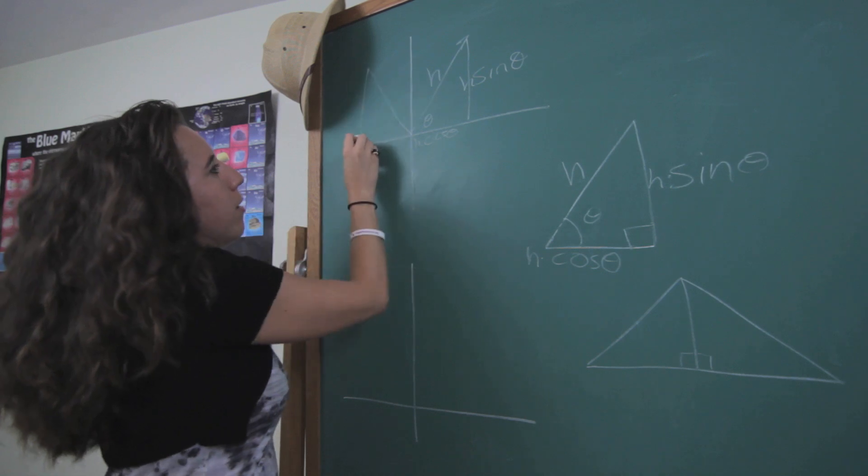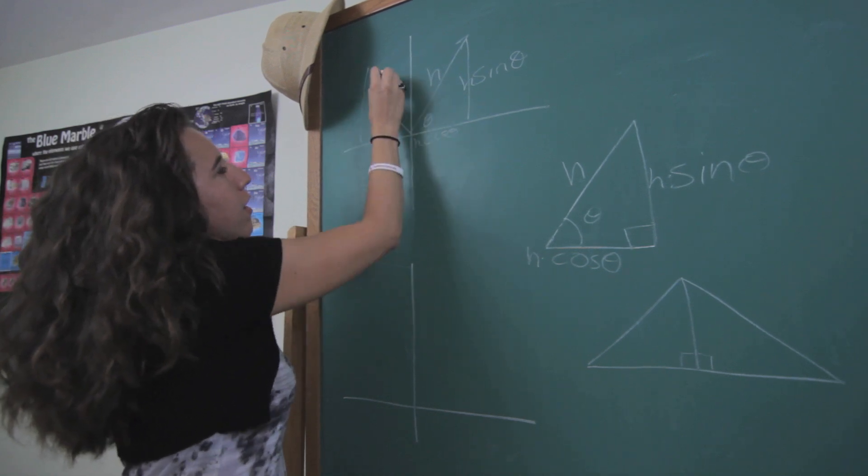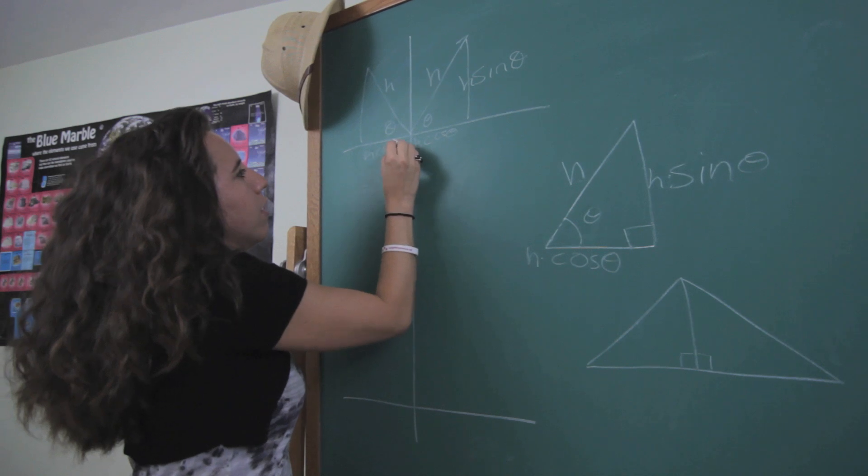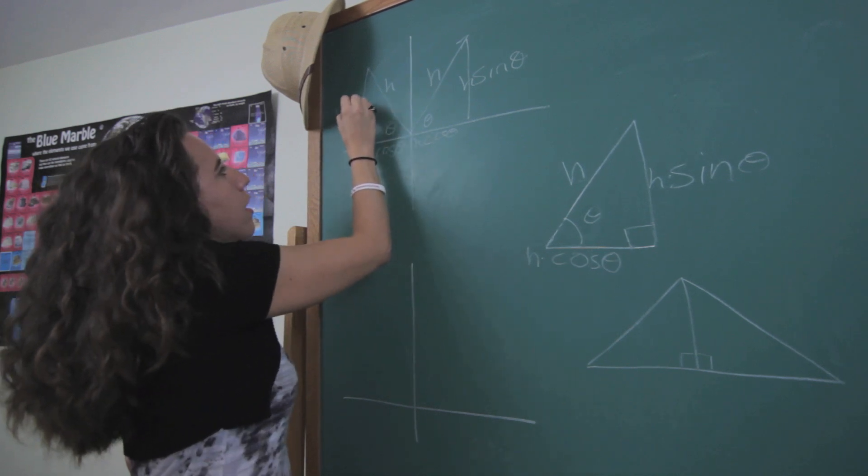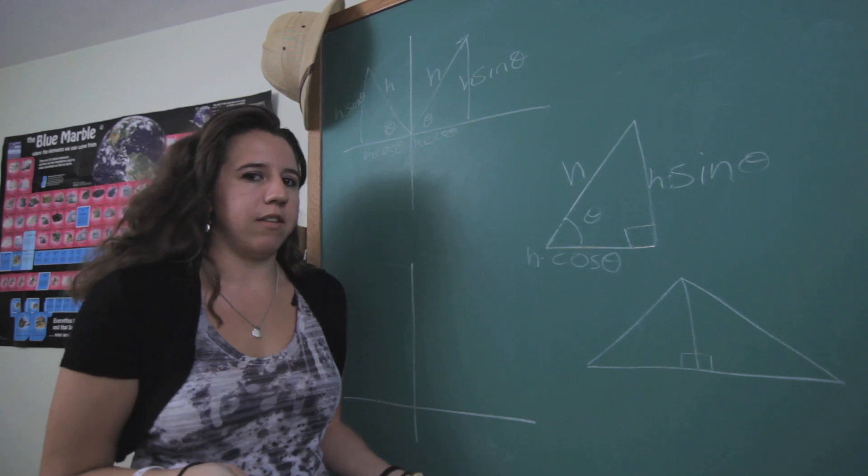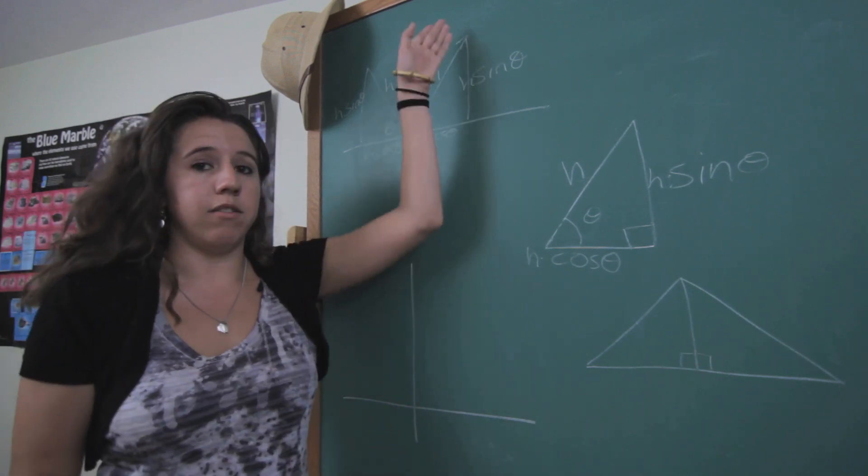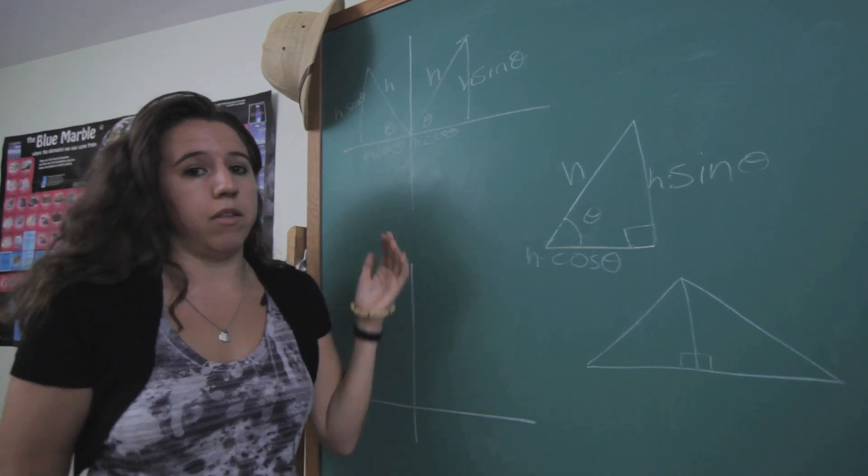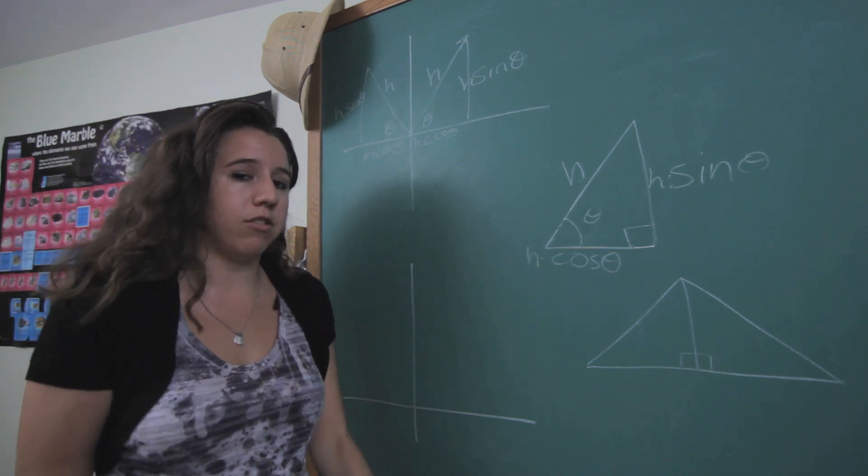So let's look at a mirror image of that. Once again theta. Once again H. Once again H cosine. Once again H sine. So you might be tempted to generalize this into sine as your vertical or up and down direction and cosine as the other one, the horizontal or back and forth direction.